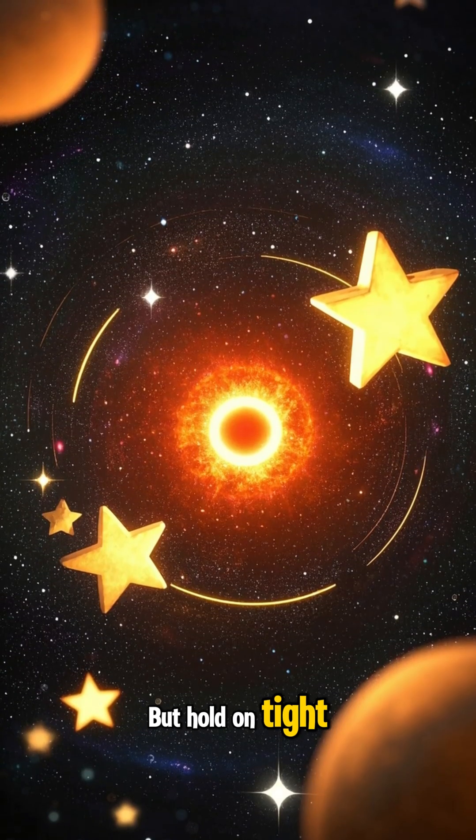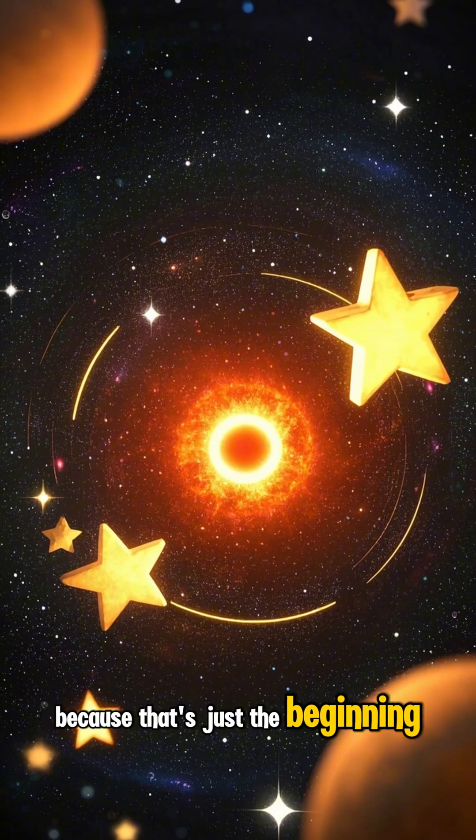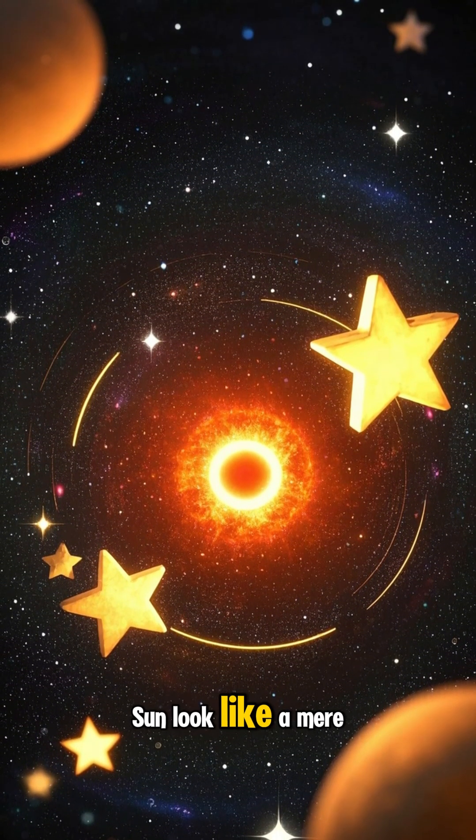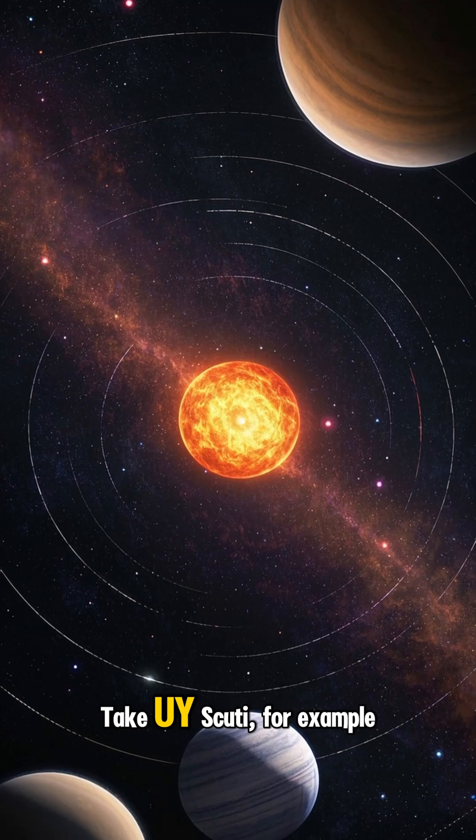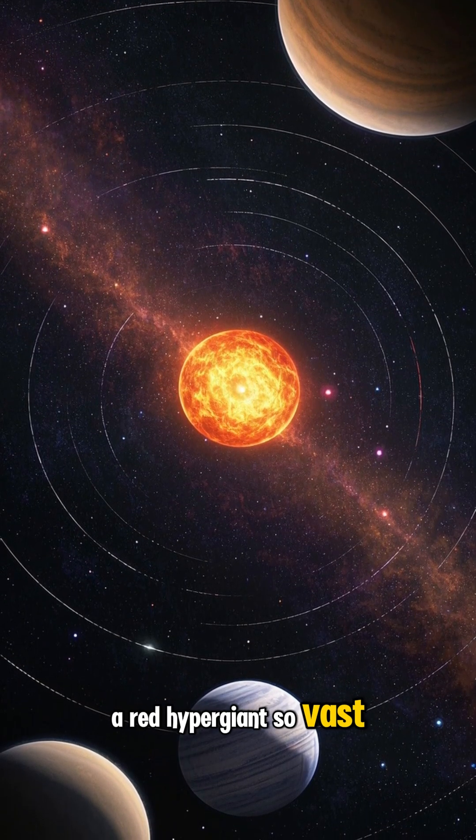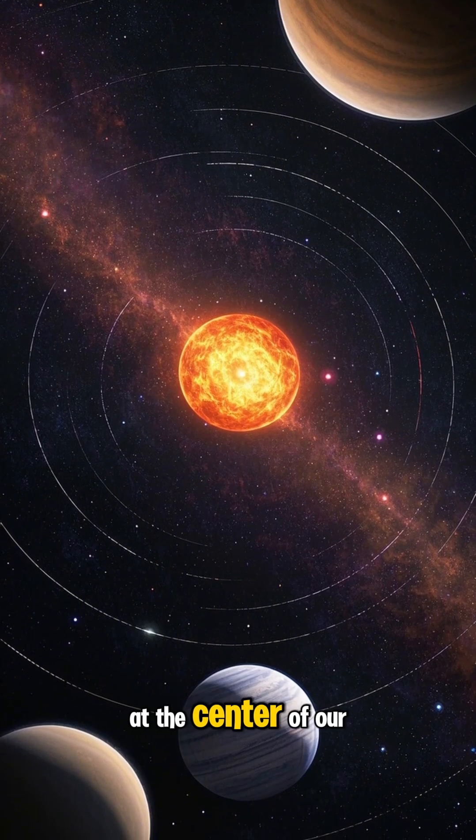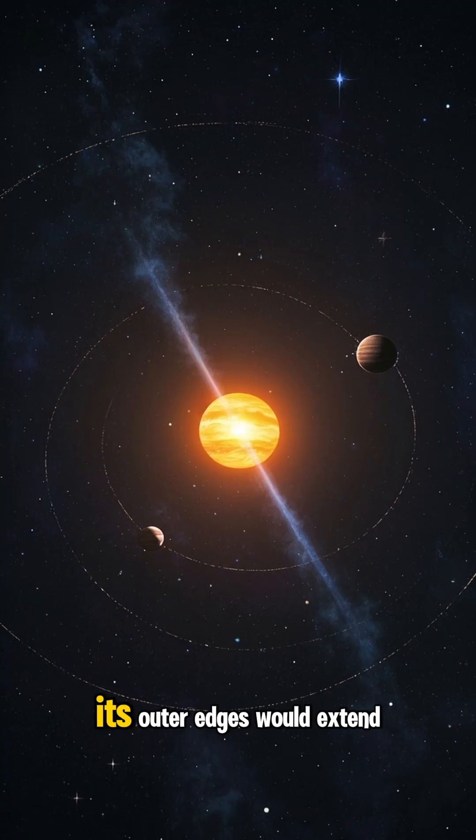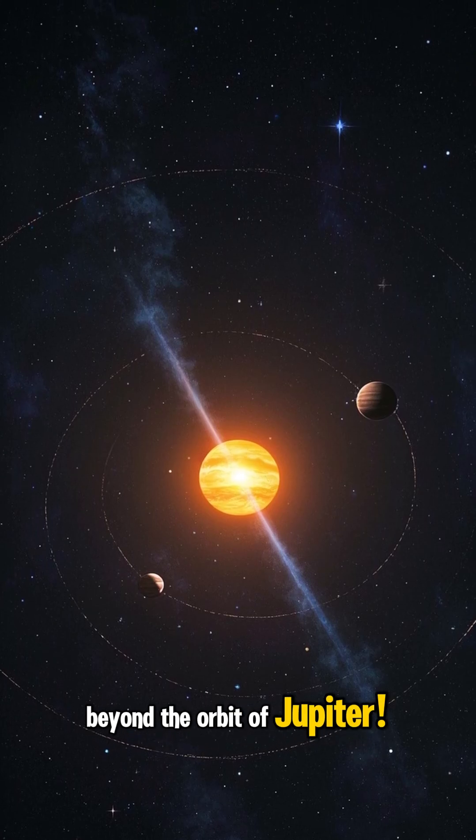But hold on tight, because that's just the beginning. Some stars make our sun look like a mere pebble. Take UY Scuti, for example. A red hypergiant so vast that if it were placed at the center of our solar system, its outer edges would extend beyond the orbit of Jupiter.